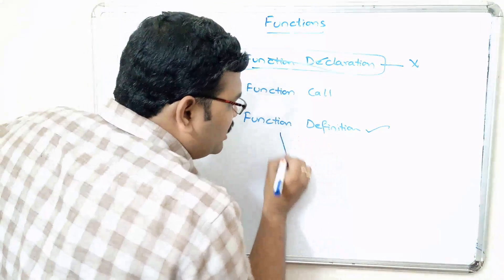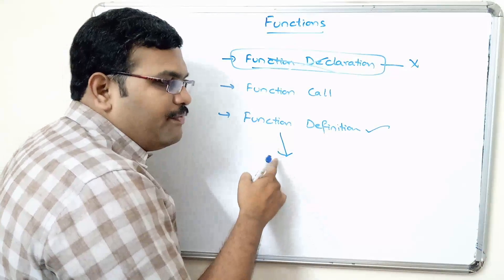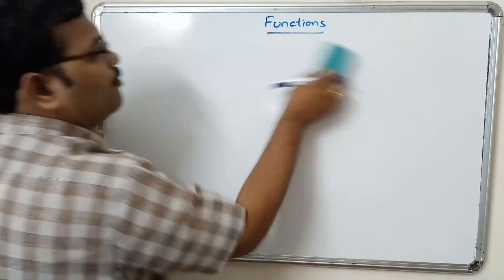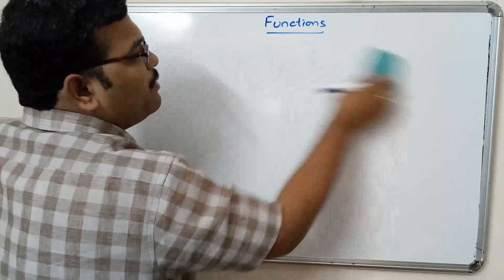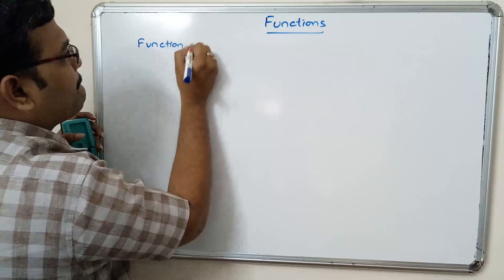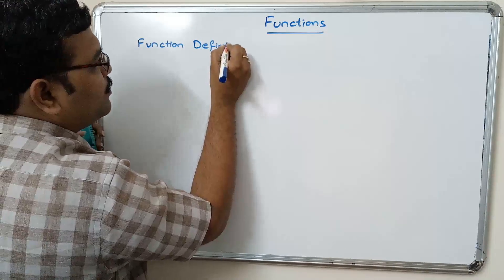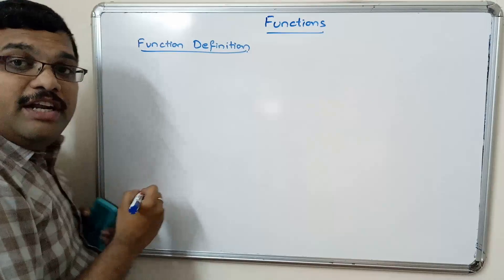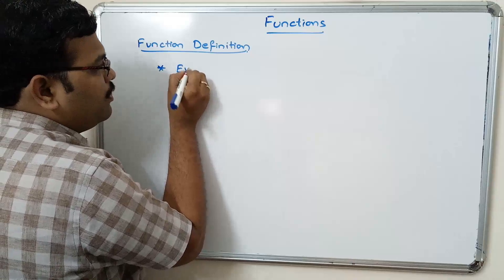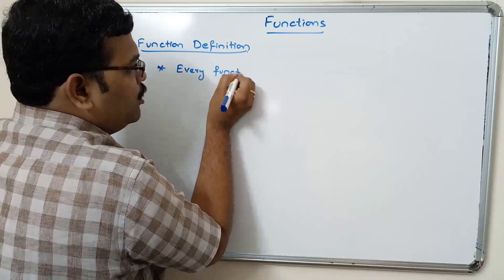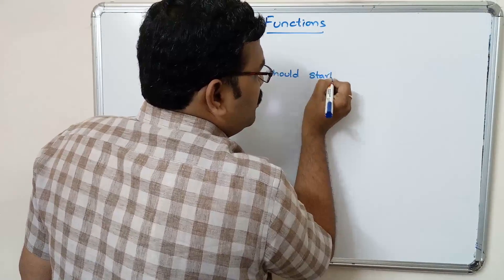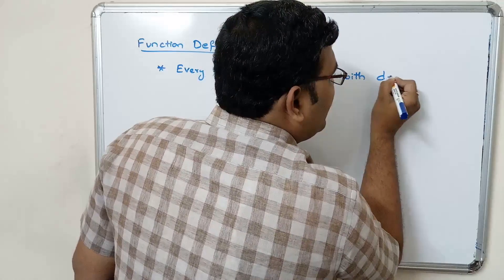So how is a function definition written? Let us look at the parameters involved in a function definition. First, every function should start with the 'def' keyword.